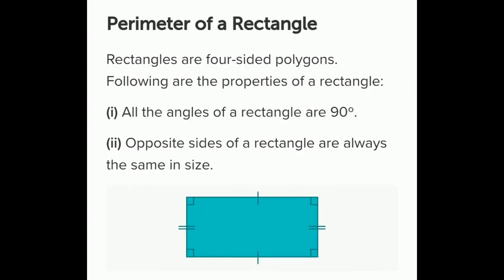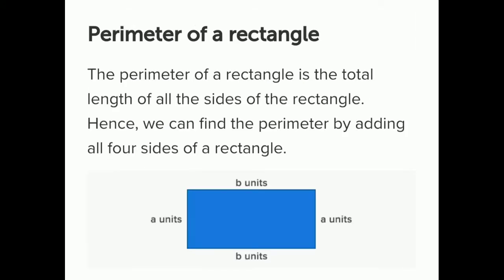Perimeter of a rectangle. Rectangles are 4-sided polygons. The properties of a rectangle are: all angles are 90 degrees, and opposite sides are always the same size. The perimeter of a rectangle is the total length of all its sides. We label the sides A units and B units. Since opposite sides are equal, the opposite sides are both A units and B units respectively.